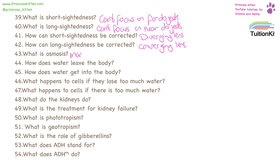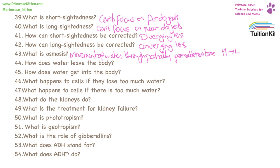Osmosis is the movement of water through a partially permeable membrane, from a high to a low water concentration. How does water leave the body? This can be sweat, tears, evaporation — lots of different ways. How does water get into the body? Drinking. If a cell loses too much water, especially a plant cell, it's going to lose its shape and become less rigid. If there is too much water, it might burst.